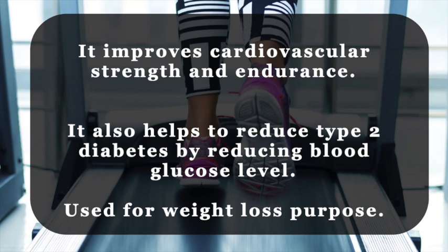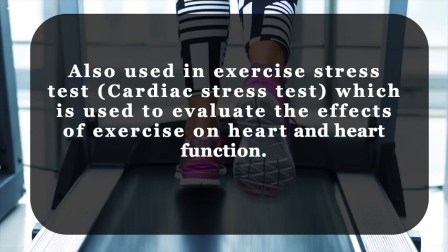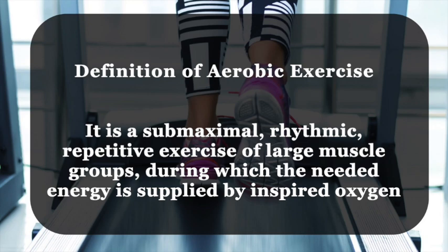The treadmill also helps to reduce type 2 diabetes by reducing blood glucose levels. The majority of people use the treadmill for weight loss. It is also used in an exercise stress test, also known as a cardiac stress test, which evaluates the effect of exercise on the heart and measures heart function. The definition of aerobic exercise: it is a submaximal, rhythmic, repetitive exercise of large muscle groups during which the needed energy is supplied by inspired oxygen.